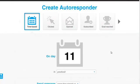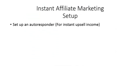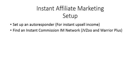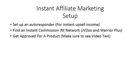So you do want to get your autoresponder set up. The next thing you want to do is find an instant commission internet marketing product network. You can use JVZoo and Warrior Plus — we looked at JVZoo in a previous video. Warrior Plus has products that are promoted inside the Warrior Forum. The next step is to get approved for one of the instant commission products. Make sure you watch video two. I'm going to now show you what the process looks like inside Warrior Plus.